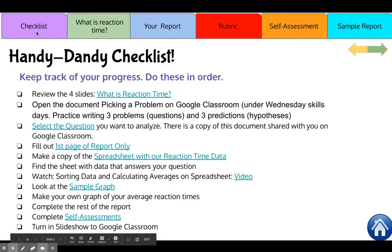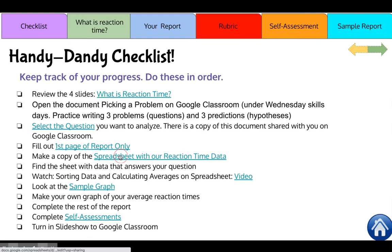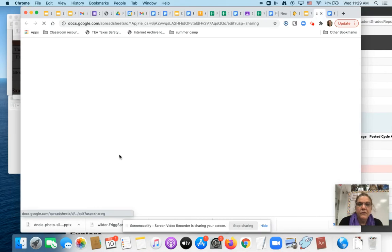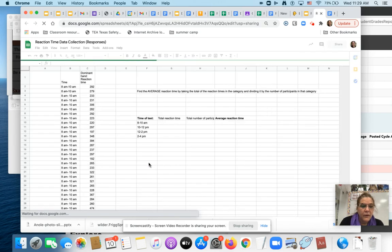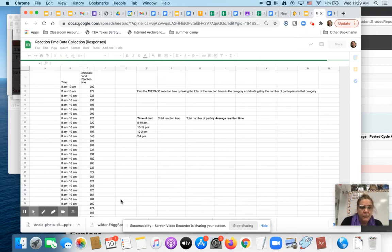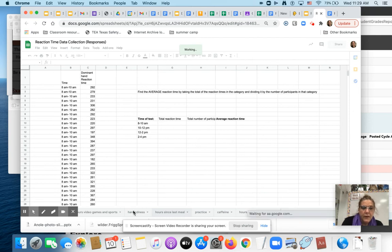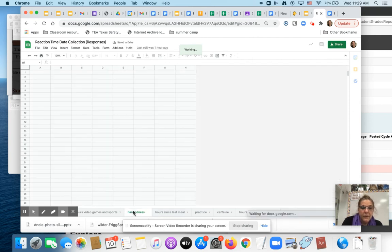Checklist. Then you are going to get this spreadsheet. You can get it on Google Classroom or right there. This has all the data from the experiment that we did. We already did this experiment. You're not going to do it again. So down here, there are these tabs. And this is where you're going to find your data.